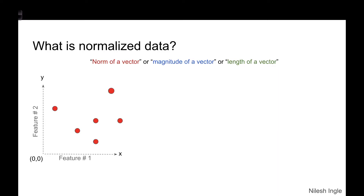So what is normalized data? Let's look at this example where we have a set of data points shown as red dots. The x-axis represents feature one and the y-axis feature two. The norm, magnitude, and length of a vector all mean the same thing. For each of these data points, if we draw an arrow from the origin, each data point can be represented as a vector, and we can use the length of that vector to normalize it.